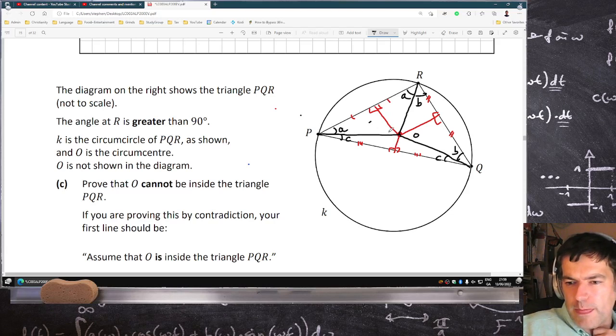So this one here we'll call alpha, and this one here would be alpha. This would be beta, this would be beta, this would be gamma, and this would be gamma. So all the angles in the center...